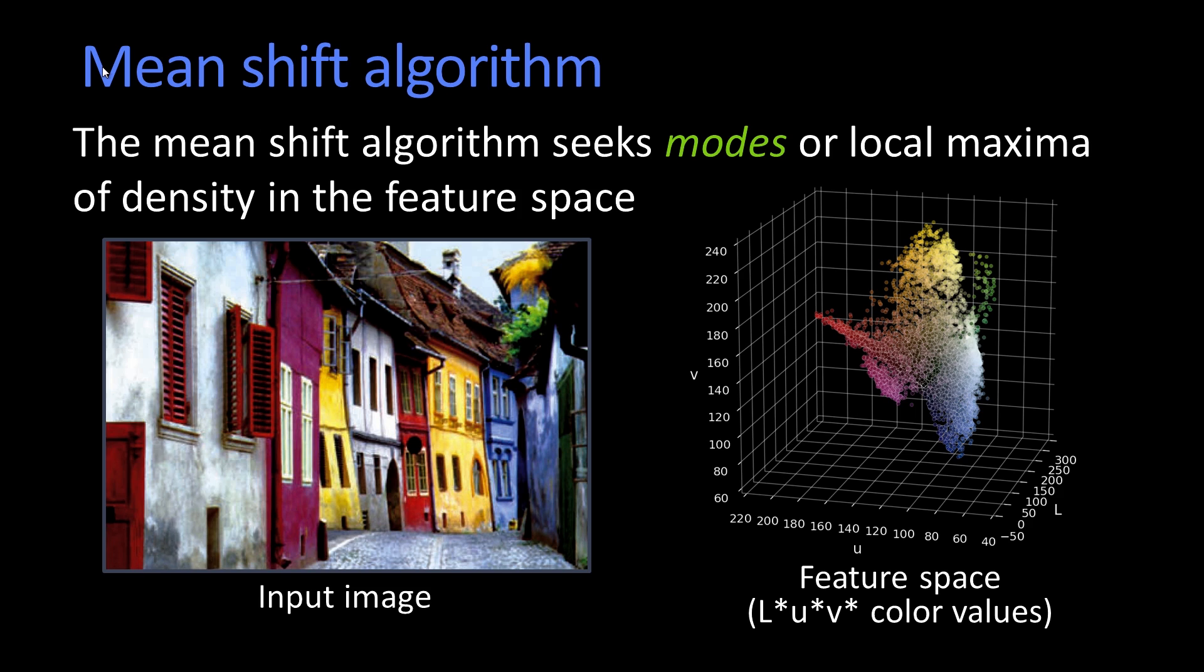So here, by the way, this is this beautiful pastel image of these houses as the input image. And what we have here on the right is the plotting of each of these pixels in the LUV color space. Remember LUV color? This is why we're doing this whole conversation after we talked about color, because if I told you LUV and you hadn't heard it, you'd think I was doing RGB. No, it's LUV, right?